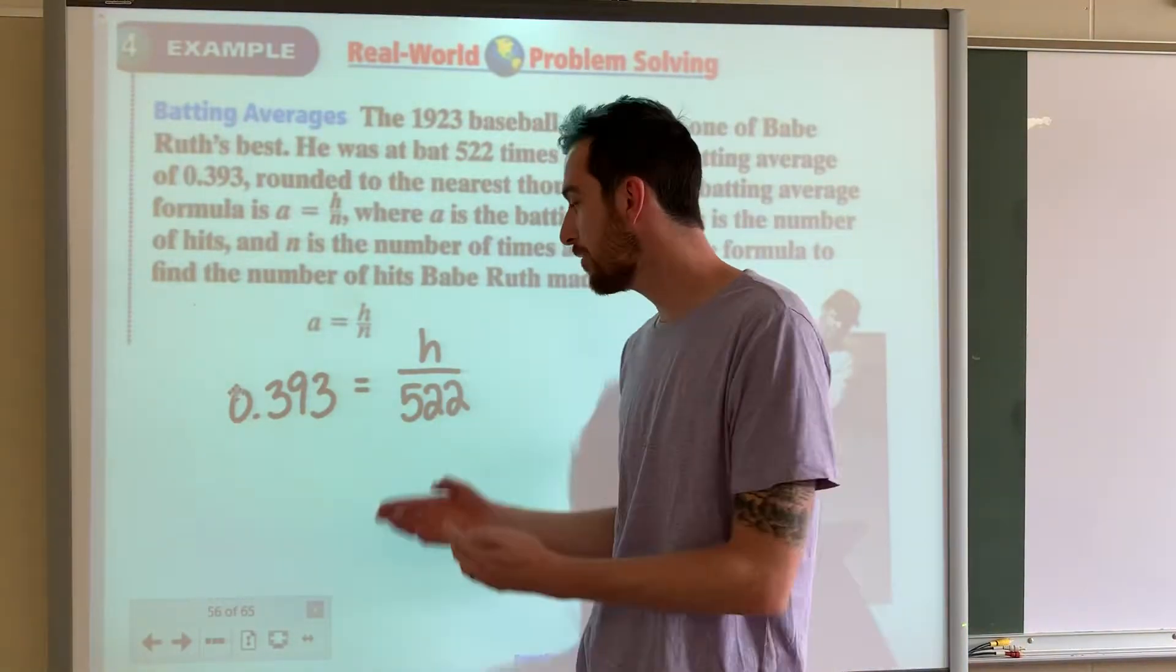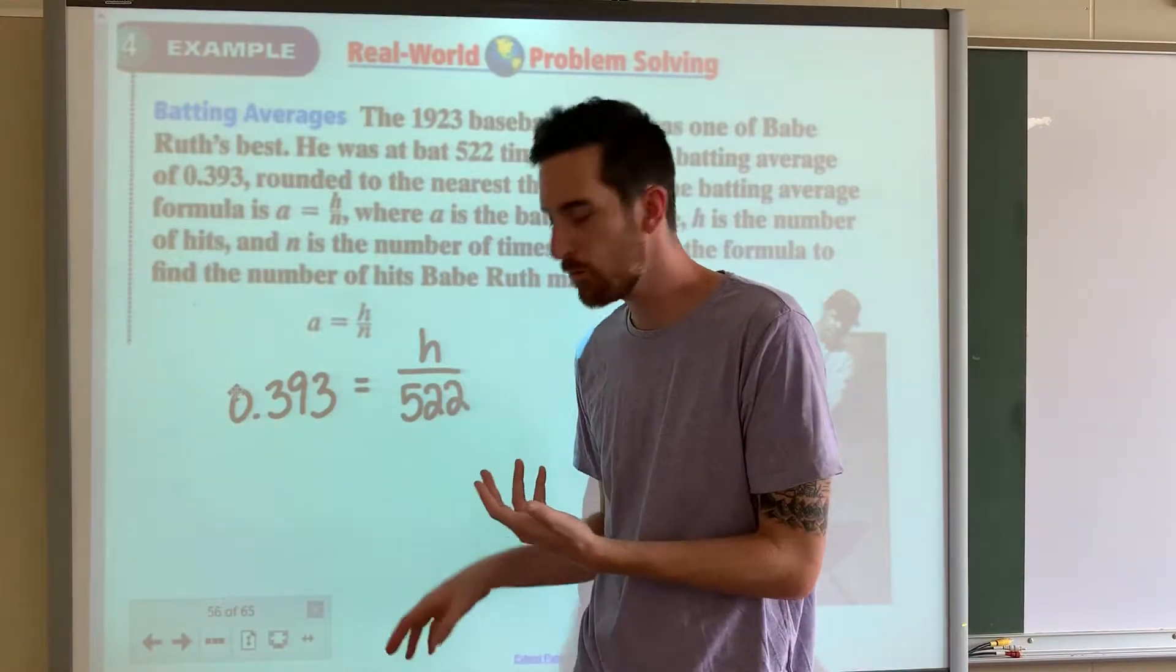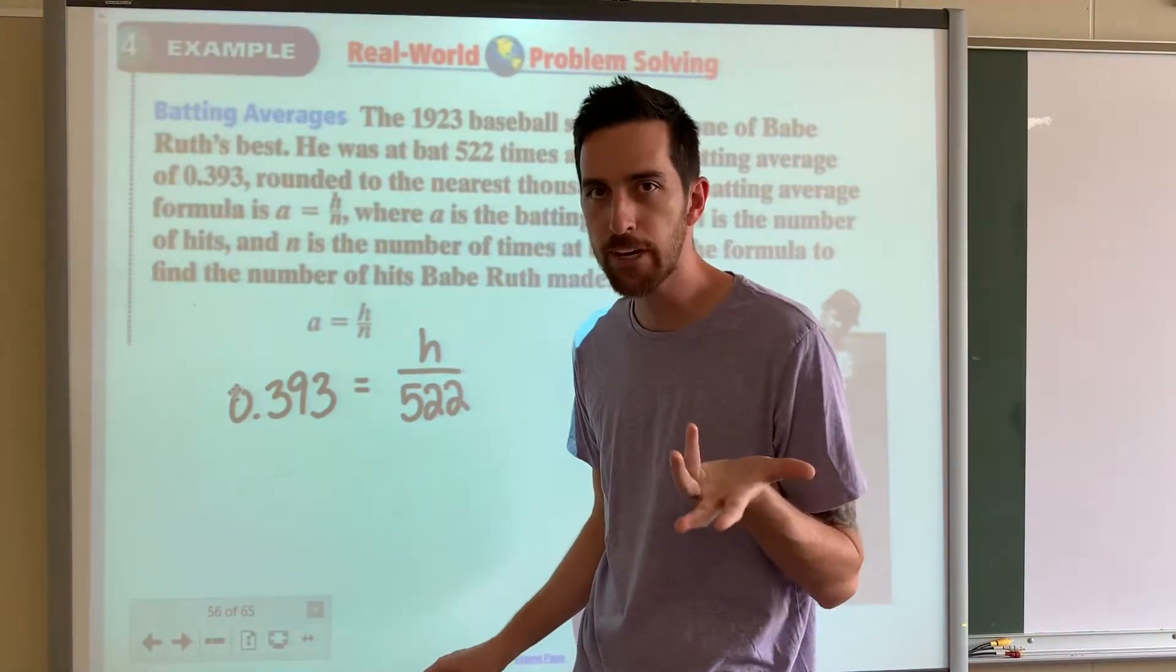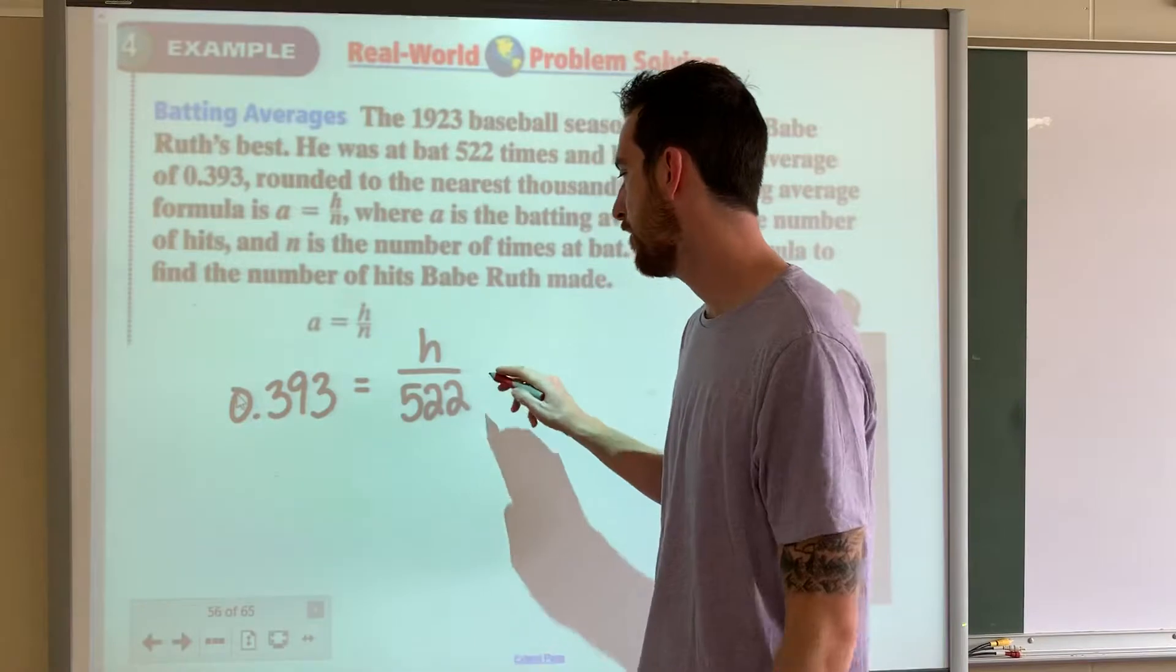Now, if I'm getting rid of divided by 522, what do we do to both sides? You multiply by 522.